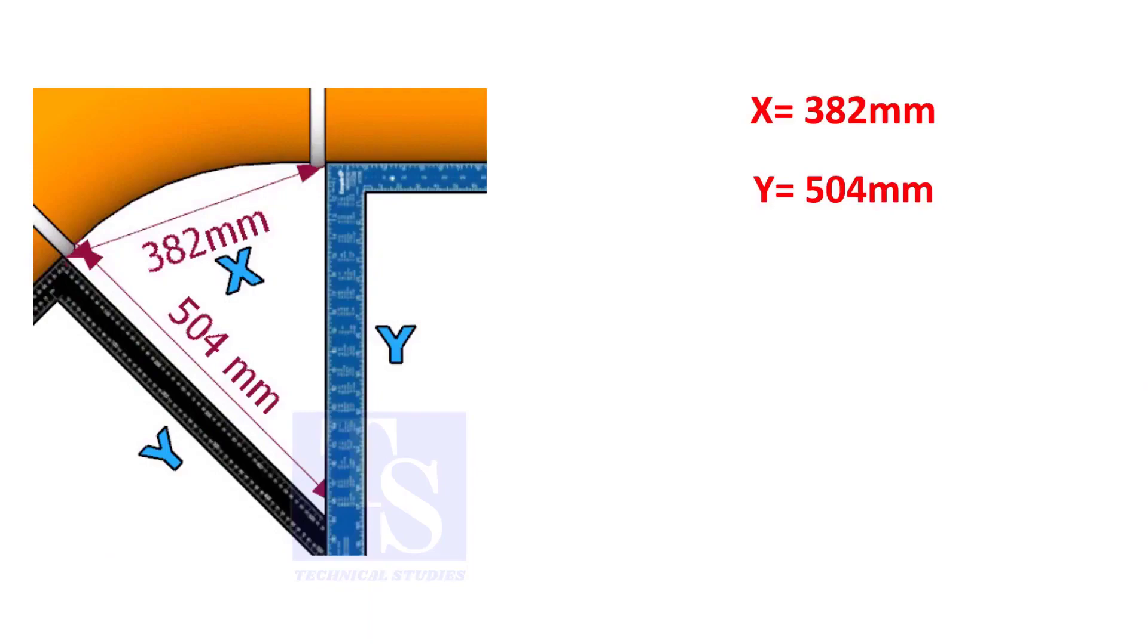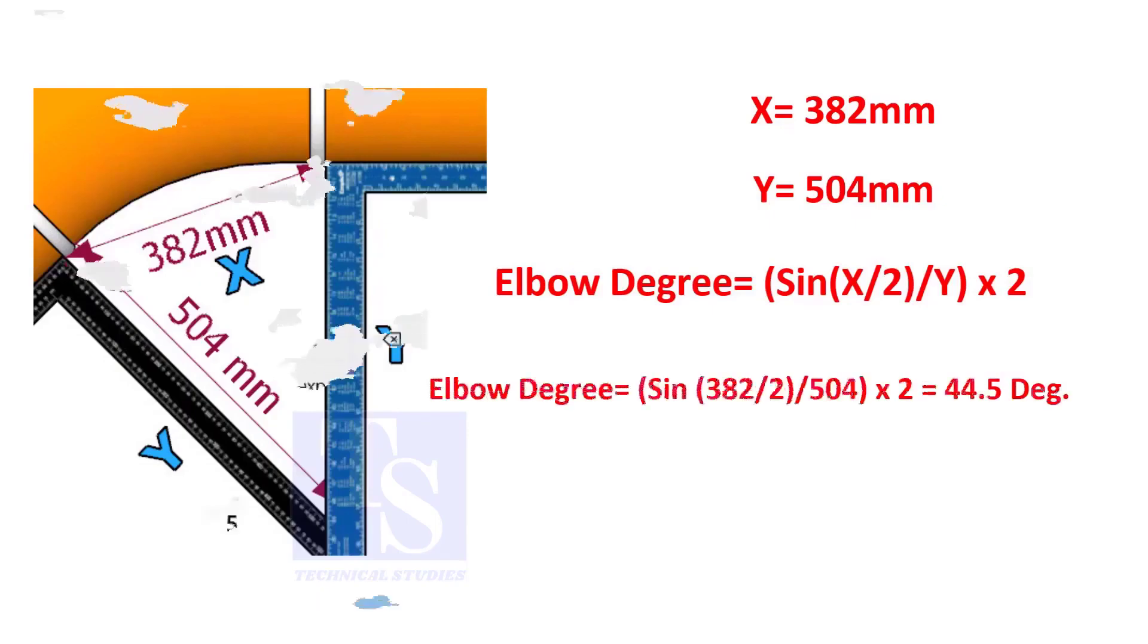Assume that the value of x is 382 and the value of y is 504. Divide the half value of 382 by 504 and convert the value to sine. Then multiply by 2.